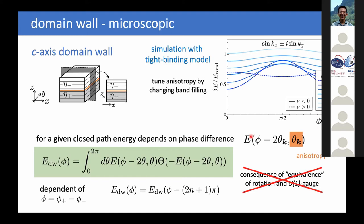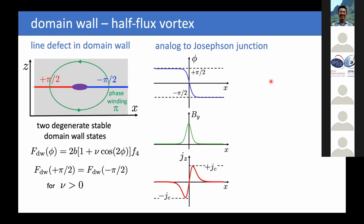For a tight-binding model where anisotropy is tuned by changing the chemical potential and band filling, using a nearest-neighbor chiral P-wave state, one can show that tuning the anisotropy changes the phase dependence of the energy. Note this runs only from zero to pi. Depending on the sign of nu: if nu is positive, the minimum is at pi/2; if nu is negative, minima are at zero and pi; if nu is zero, there is no phase dependence.